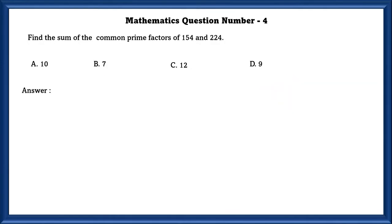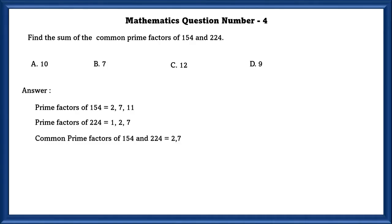Mathematics question number 4. Find the sum of the common prime factors of 154 and 224. Prime factors of 154 are 2, 7, and 11. Prime factors of 224 include 2 and 7. Common prime factors of 154 and 224 are 2 and 7. So the sum of these two common prime factors is equal to 9.